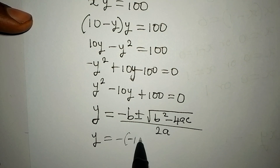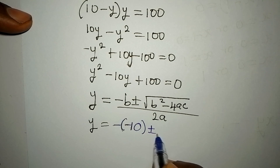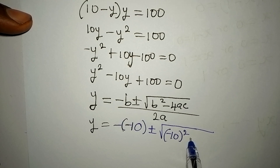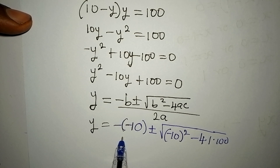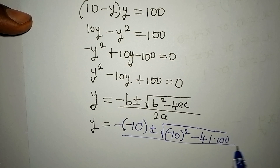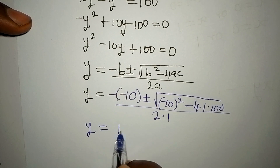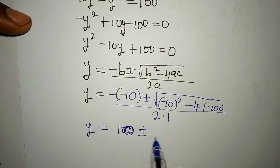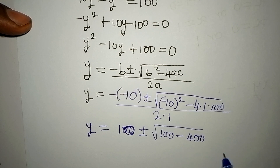Substituting: y equals minus(minus 10) plus or minus the square root of (minus 10)² minus 4 times 1 times 100, all over 2 times 1. This gives y equals 10 plus or minus the square root of 100 minus 400, over 2, which is the square root of negative 300 over 2.